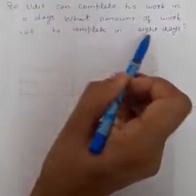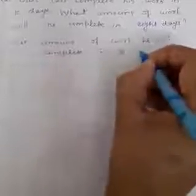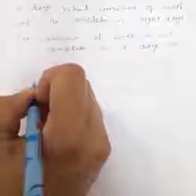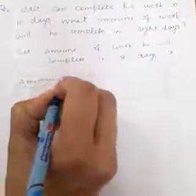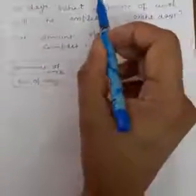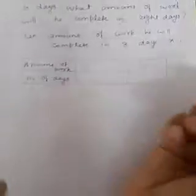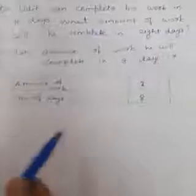Next question: Udit can complete his work in 10 days. What amount of work will he complete in 8 days? Let the amount of work he completes in 8 days equal x. The two quantities to consider are amount of work and number of days. The complete work is taken as 1, completed in 10 days. We need to find how much work he completes in 8 days. Since the amount of work done varies directly with time taken, this is a case of direct variation.